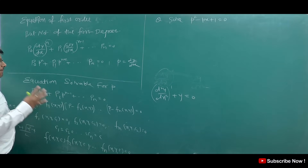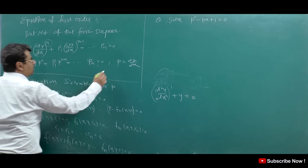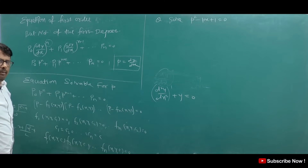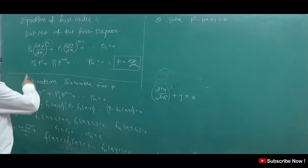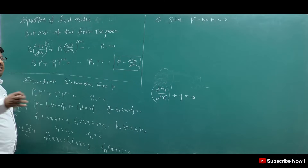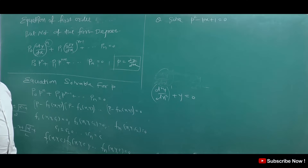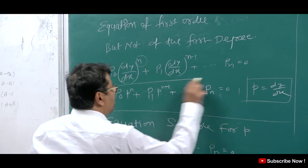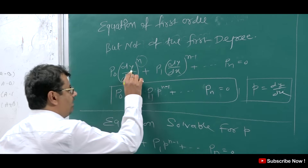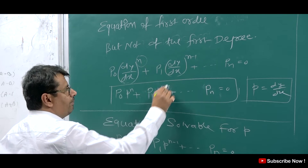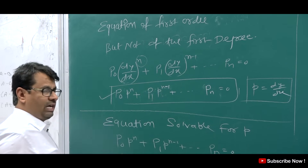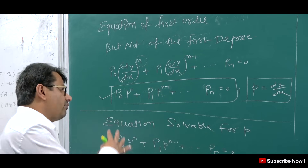This is the first order and n-th degree differential equation. We denote dy/dx as small p. The capital P₀, P₁, etc. are functions of x — polynomials. So this type of equation we can write as: p^n + P₁·p^(n-1) + ... and so on. This is our general form.